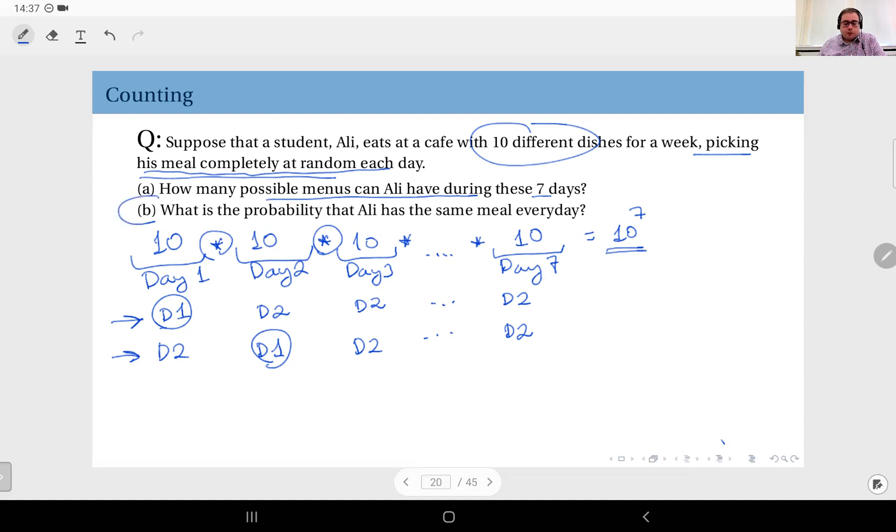Now, in part B, we are now asked a probability. What is the probability that Ali has the same meal every day? So this could be dish one all through the week, or dish two all through the week, or dish three all through the week, etc., up to dish 10 all through the week. You see, we have 10 such possible outcomes. 10 such menus in which the dish is exactly the same on each day of the week.